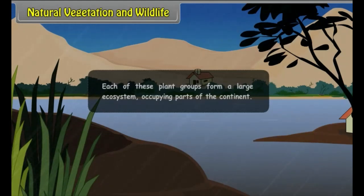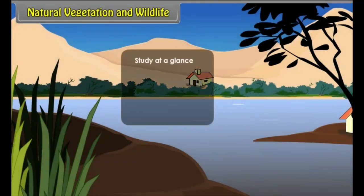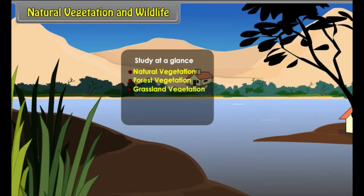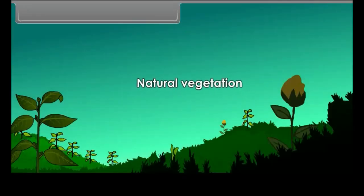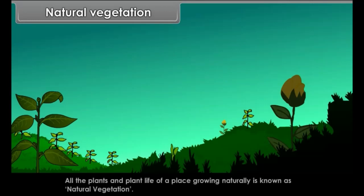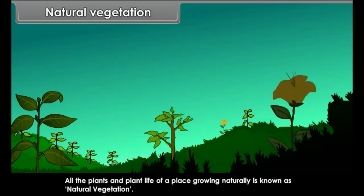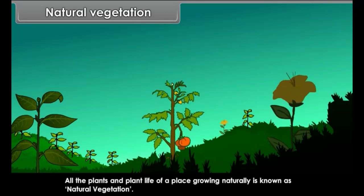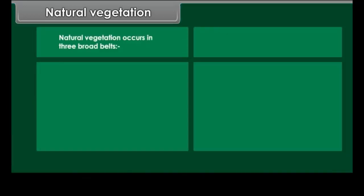Study at a glance — Natural vegetation includes: Forest vegetation, Grassland vegetation, Desert vegetation, and Tundra vegetation. All the plants and plant life of a place growing naturally is known as natural vegetation. Natural vegetation occurs in three broad belts: forests, grasslands, and deserts.